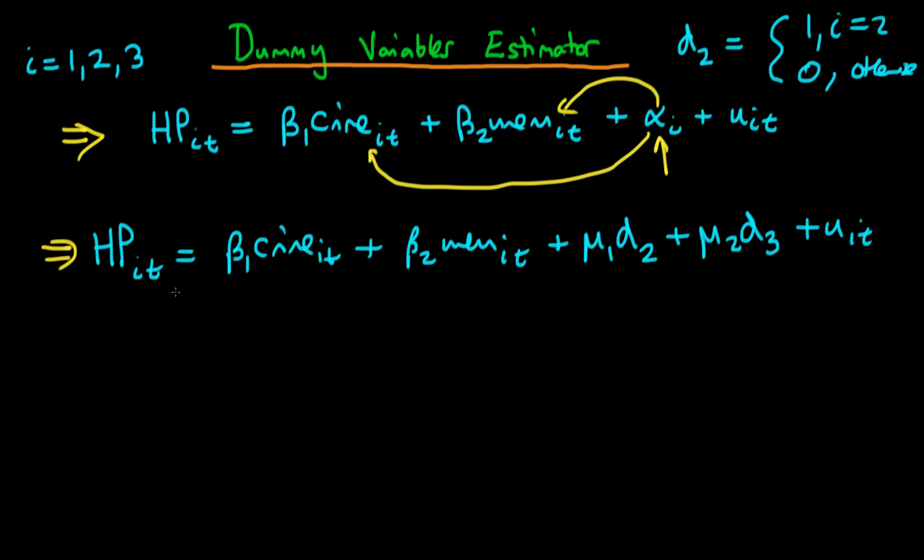Okay so what are the properties of this dummy variables estimation of the parameters beta1 and beta2? Well it turns out that dummy variables estimation is consistent under the same criteria which fixed effects estimation is consistent. In other words the covariance of any of our independent variables xit with this idiosyncratic error uit has to be equal to 0. So that's a weak exogeneity assumption.